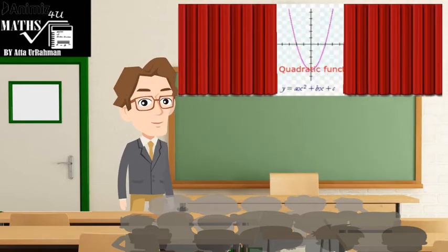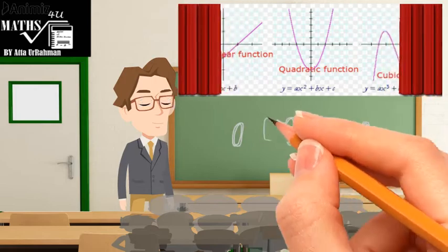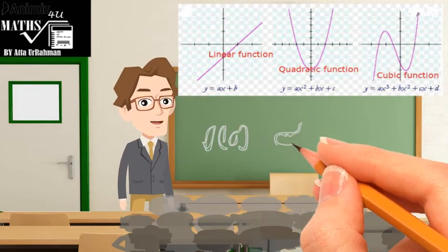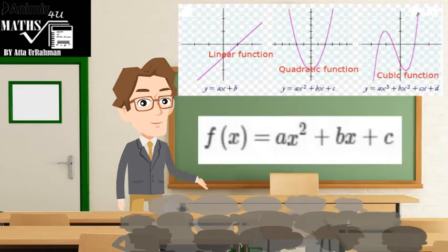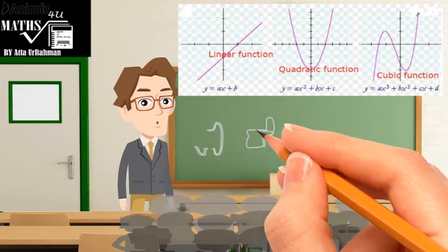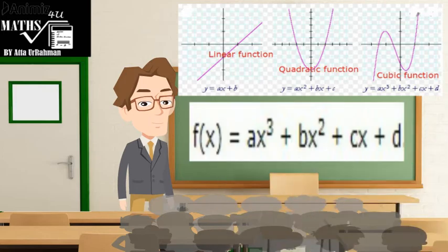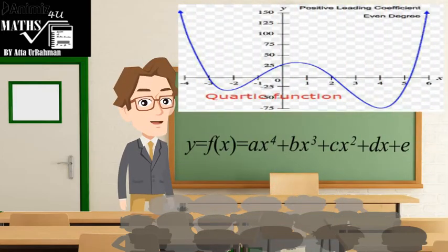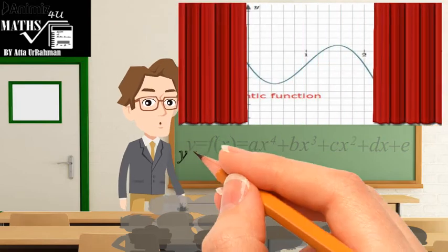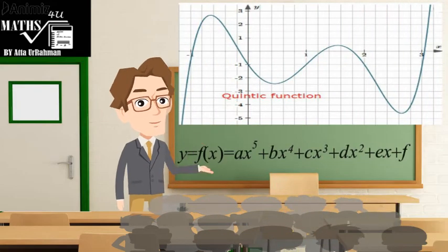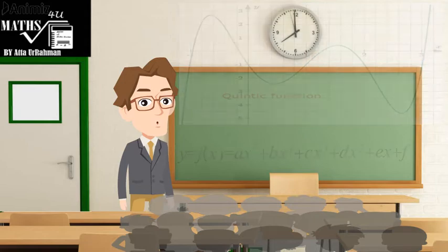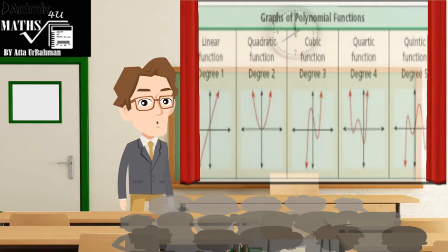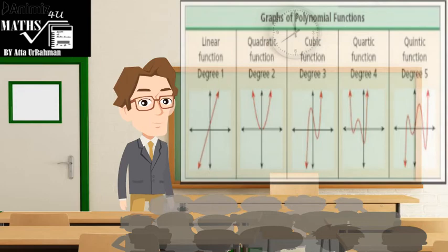A polynomial of degree 1 is called a linear polynomial. A polynomial of degree 2 is called a quadratic polynomial. A cubic polynomial has degree 3. Likewise, degree 4 and degree 5 polynomials are called quartic and quintic polynomials respectively. In the next chart you can see the graphs of linear, quadratic, cubic, quartic, and quintic polynomials respectively.